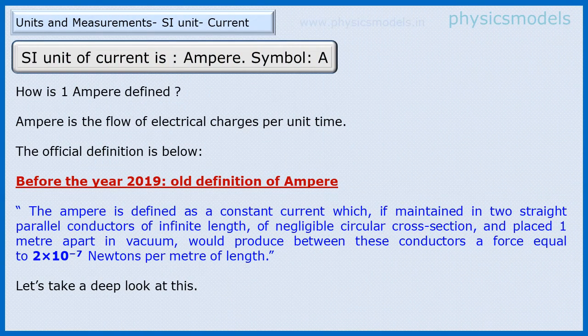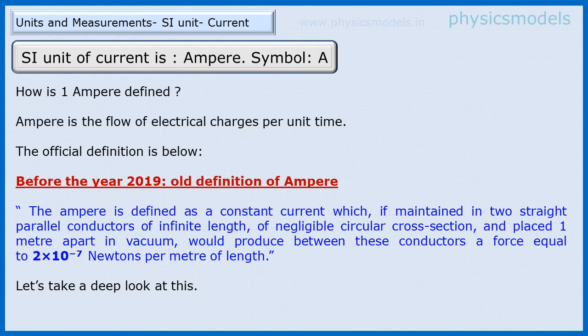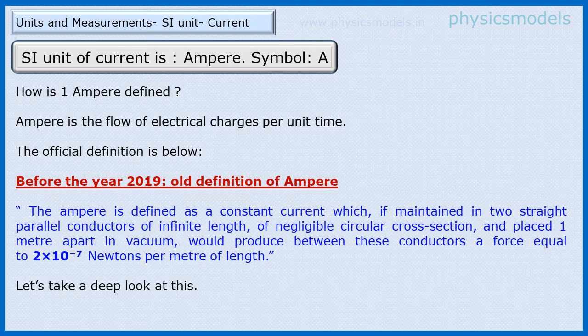The SI unit of current is Ampere and the symbol is A. Probably everybody knows that, but in this video I'm going to focus on making the definition of Ampere easy, the old definition that existed before 2019 and the new definition that came into existence after 2019.